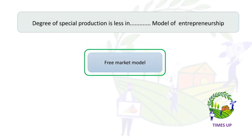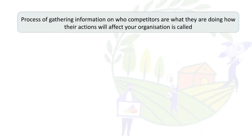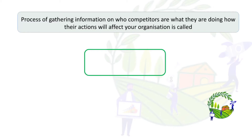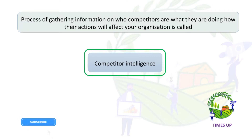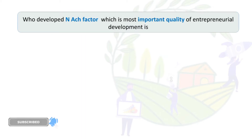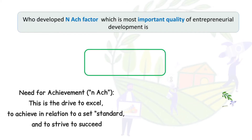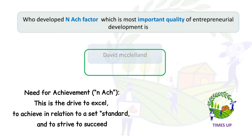The process of gathering information on who competitors are, what they are doing, and how their actions will affect your organization is called competitor intelligence.